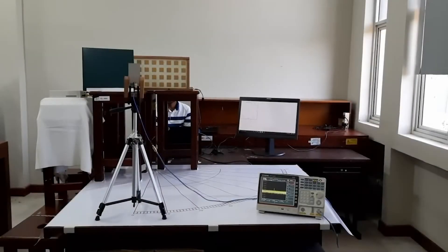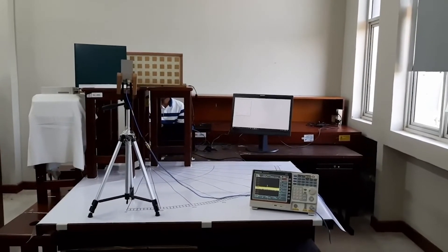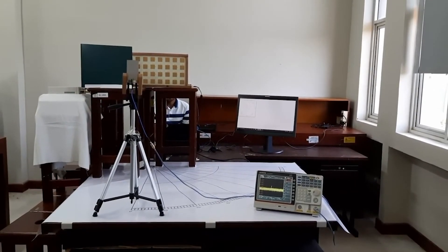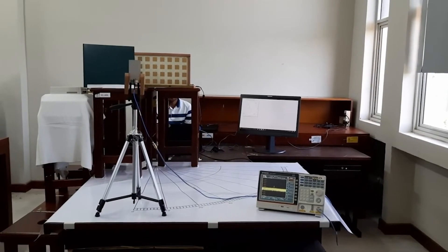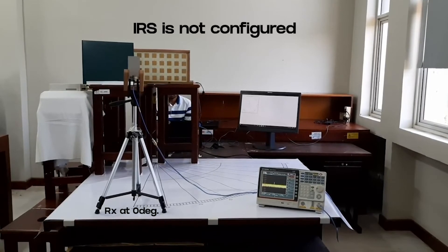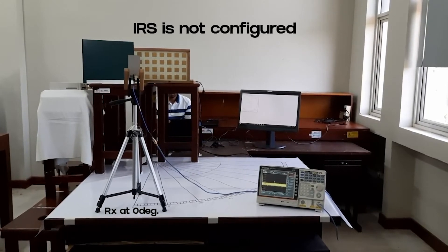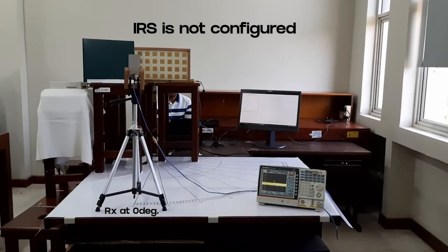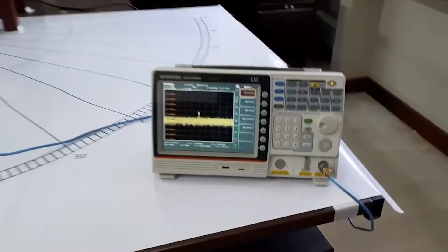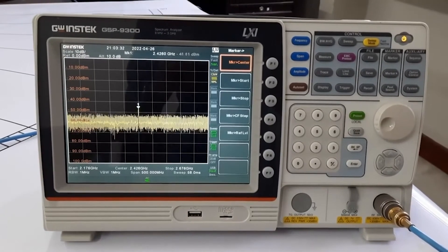Now let's move on to the demo of our project. You can see this is the initial setup of our demonstration. The receiver is at zero degrees which is perpendicular to the IRS, and the line of sight path between the transmitter and receiver is blocked by a metal sheet. So now the IRS is configured to have off state for all the unit cells. You can see the power level at zero degree direction at the operating frequency of 2.42 GHz. The power level is around minus 46 dBm.